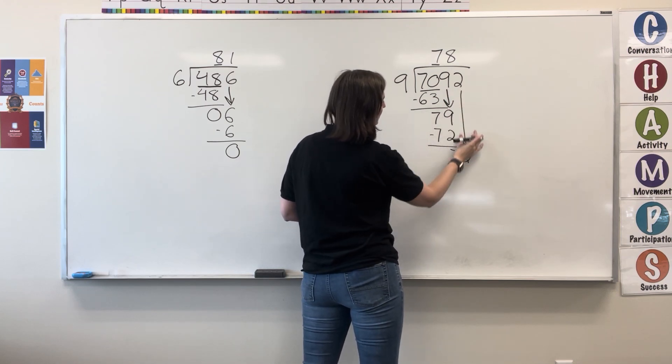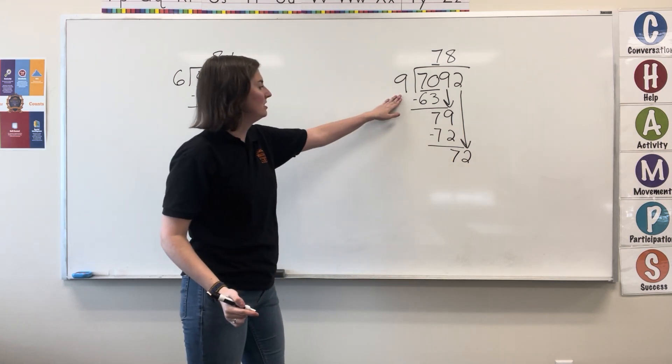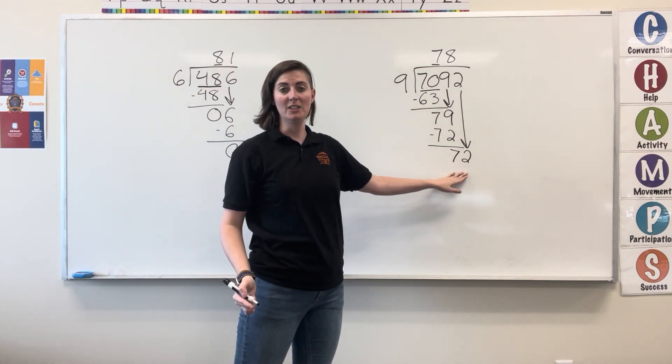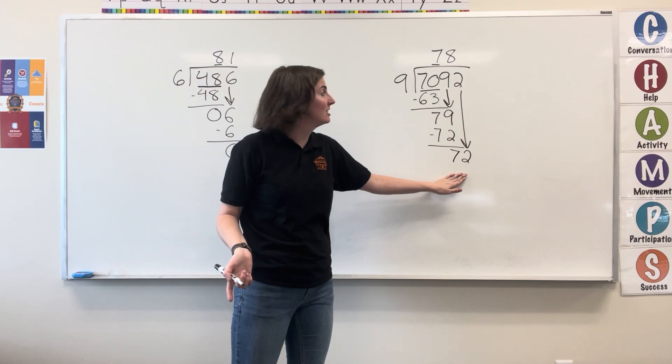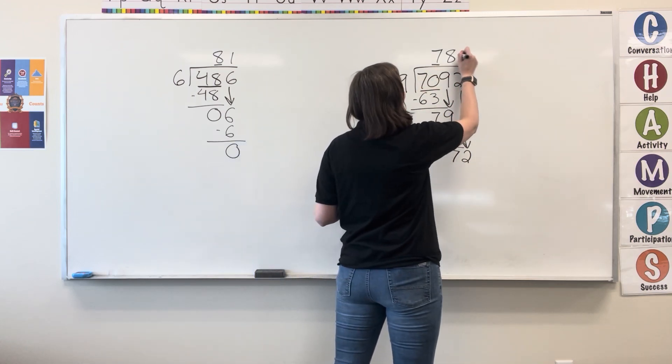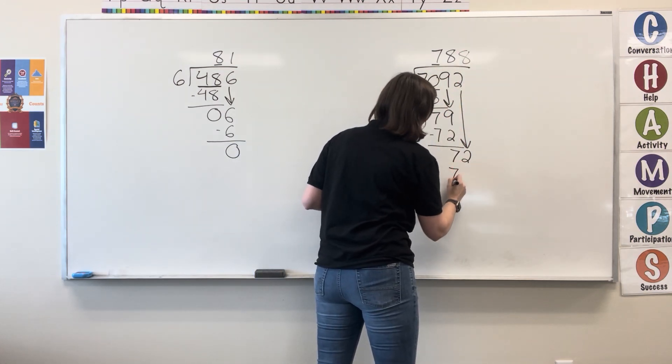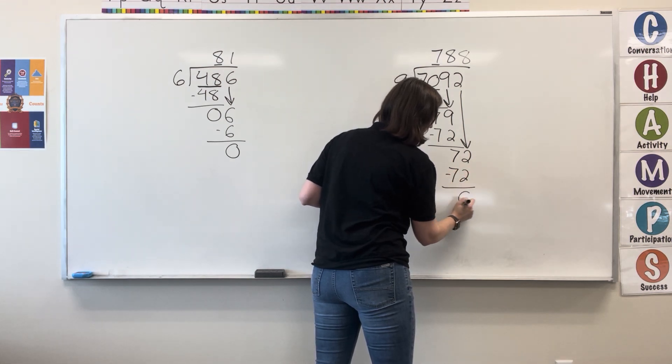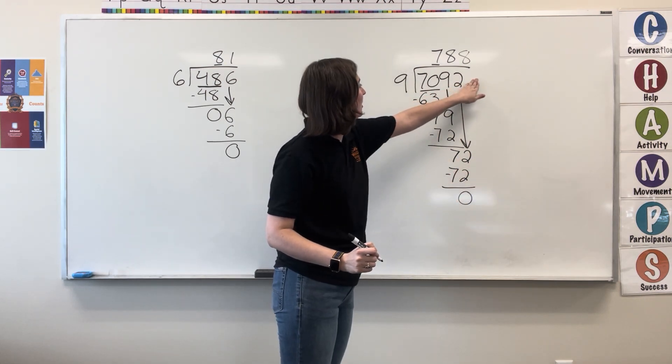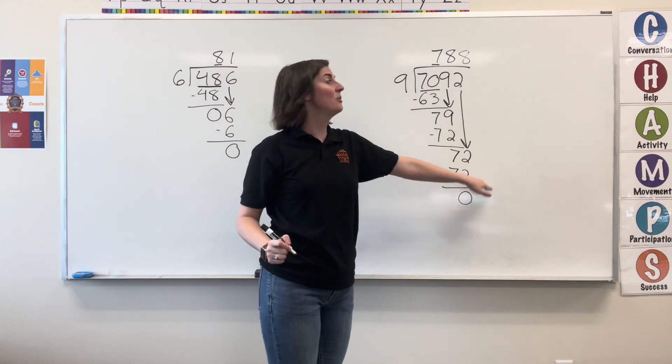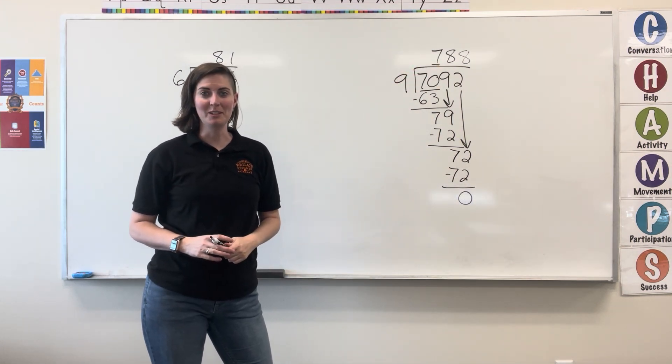Bring down one digit. My new equation is 9 into 72. We know that 9 goes into 72 8 times. 8 times 9 is 72. Subtract. I have 0. There are no other digits to bring down. That means 788 is my quotient.